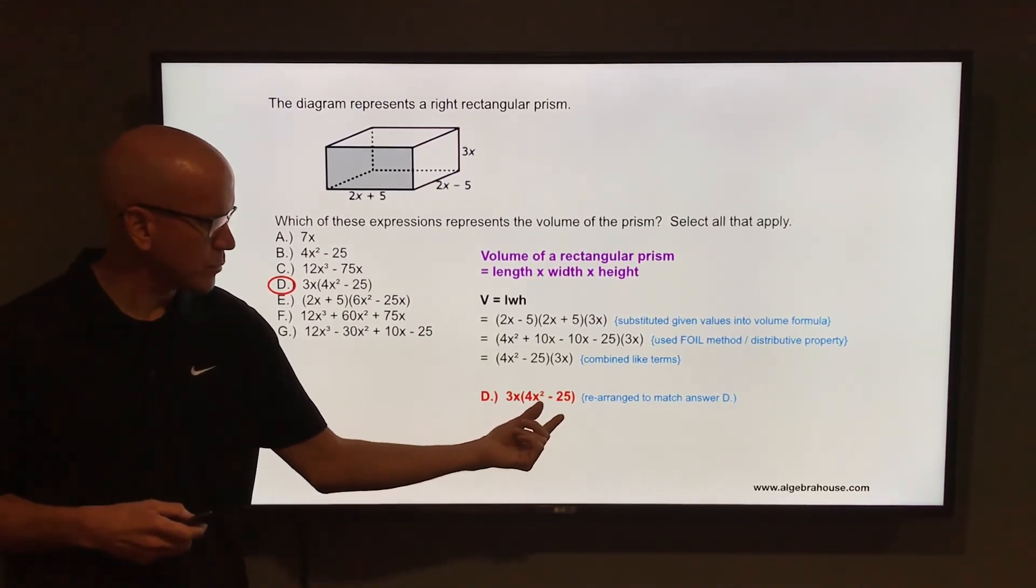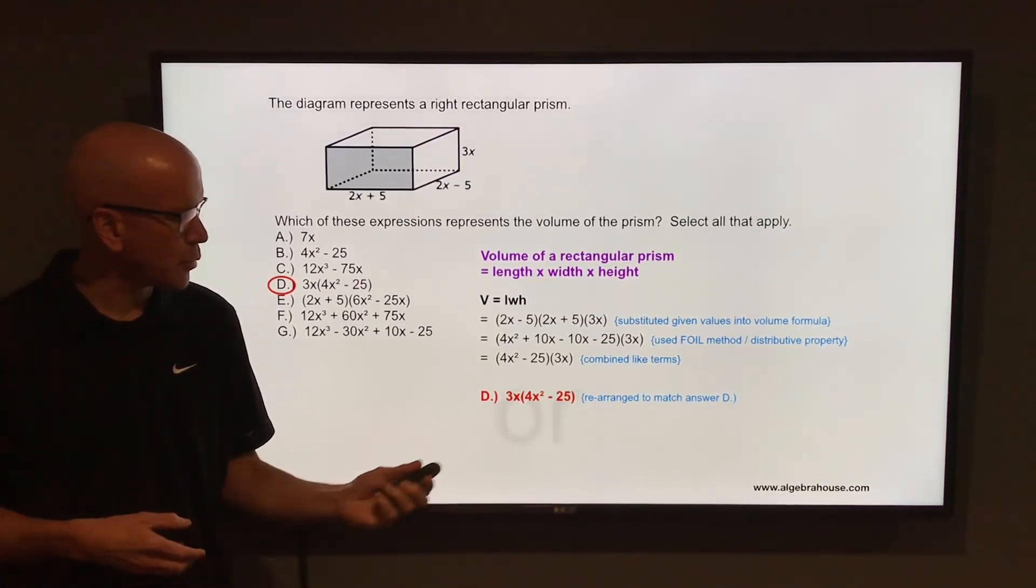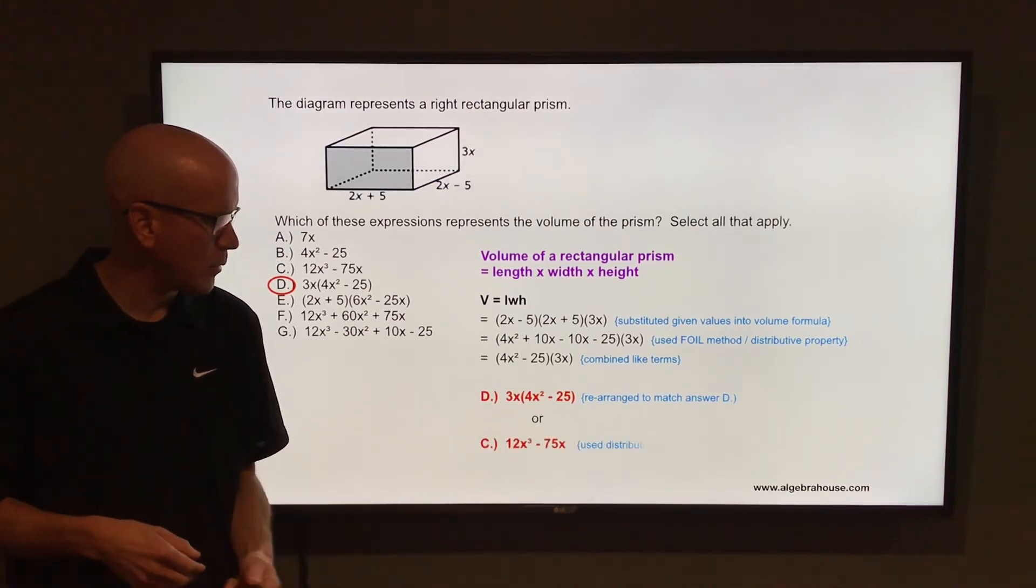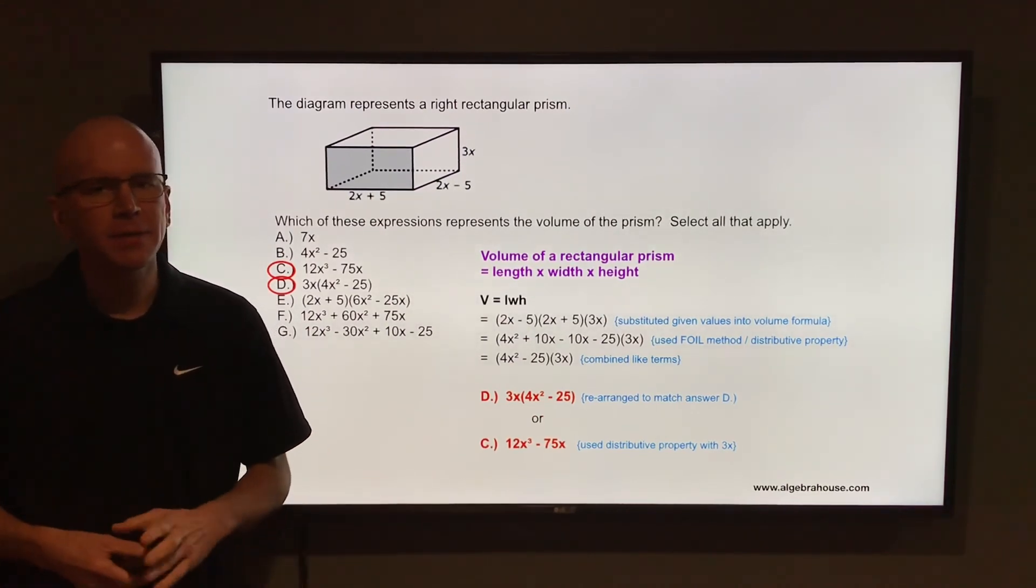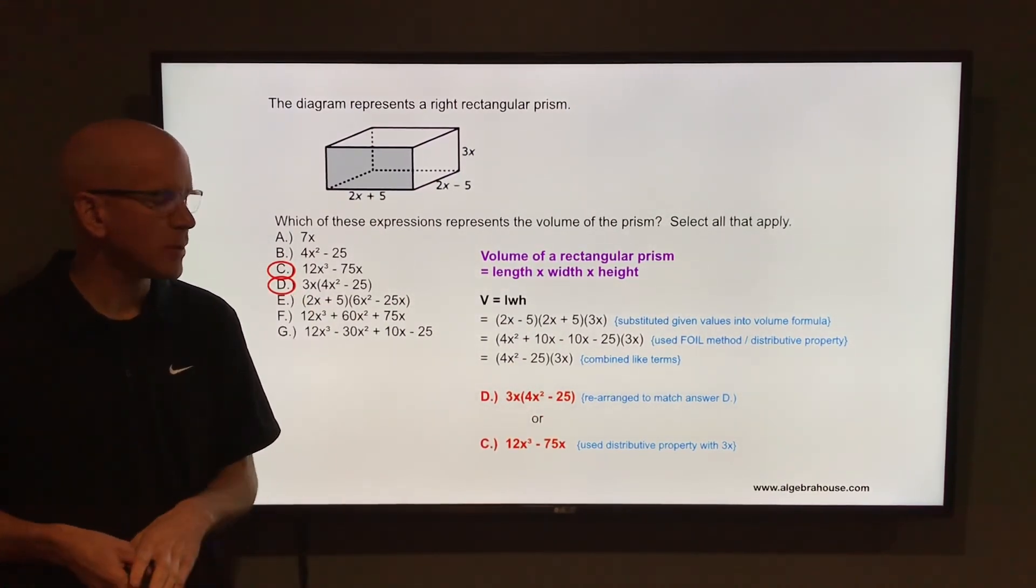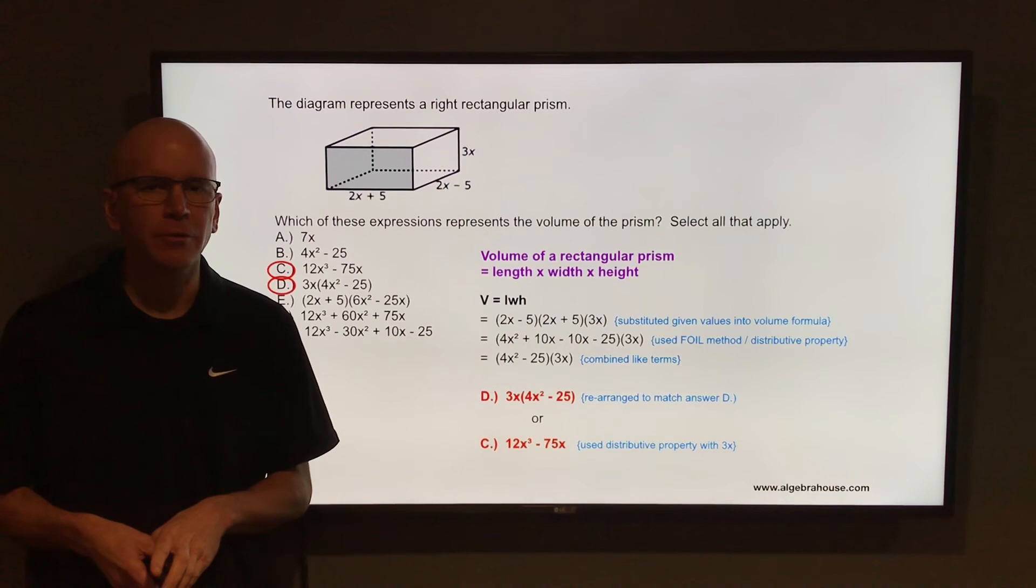If you distribute that 3x through that set of parentheses, so take 3x times 4x squared, that would be 12x to the third, and 3x times negative 25, that is negative 75x, which is also answer C. C and D are the correct answers there.